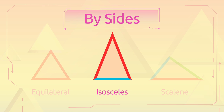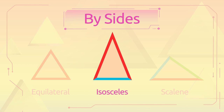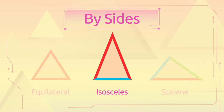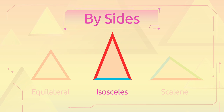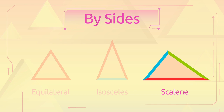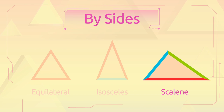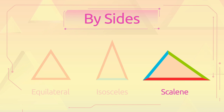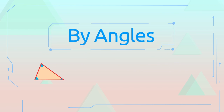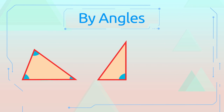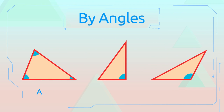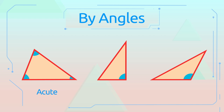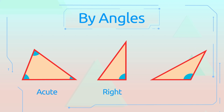A triangle with two equal sides is called an isosceles triangle, and the triangle whose sides are all different is called a scalene triangle. If we classify triangles depending on their angles we get three types: the acute triangle, the right triangle, and the obtuse triangle.